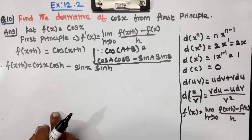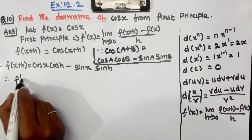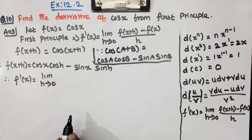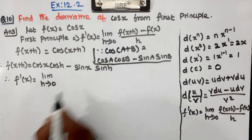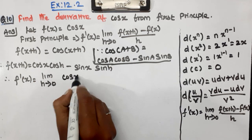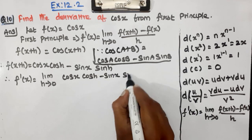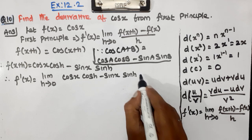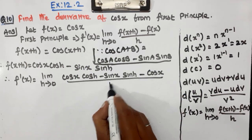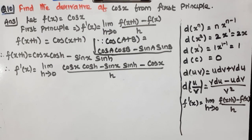Therefore, F'(x) = limit h tends to 0 of [cos x · cos h − sin x · sin h − cos x], whole divided by h.